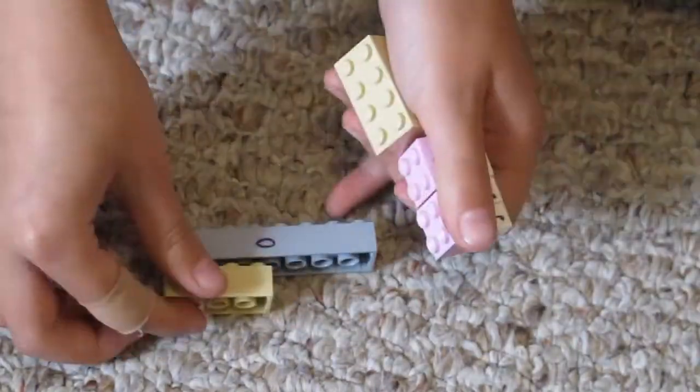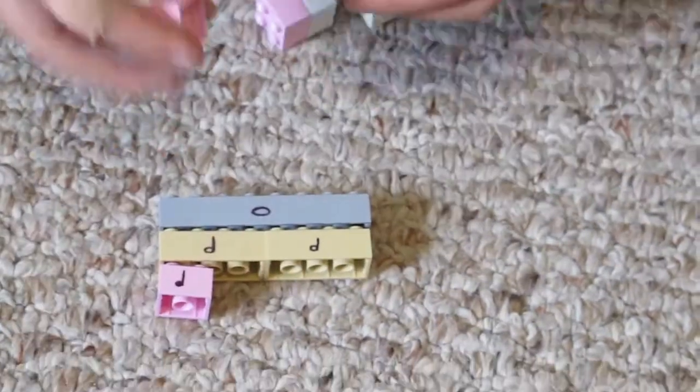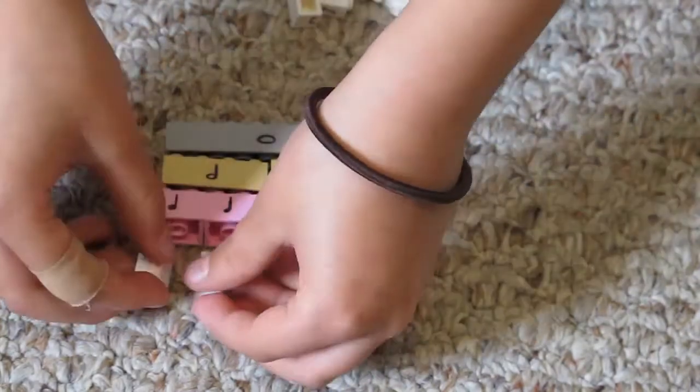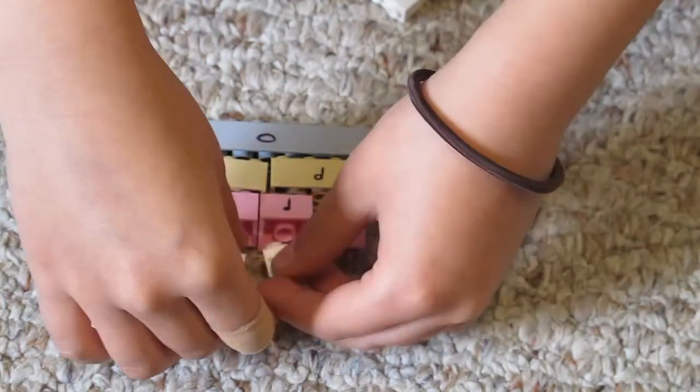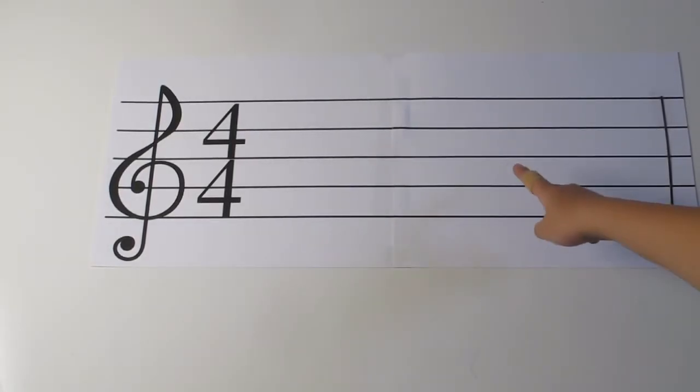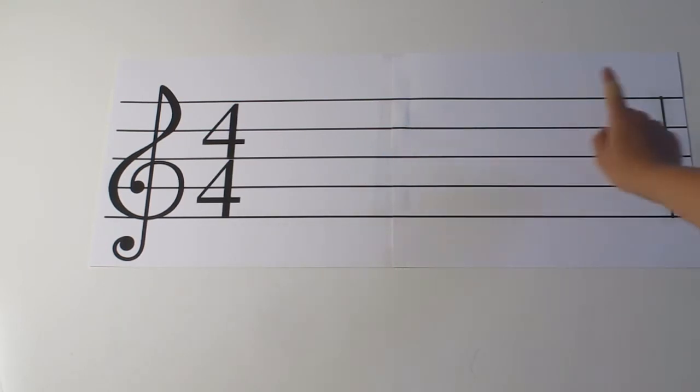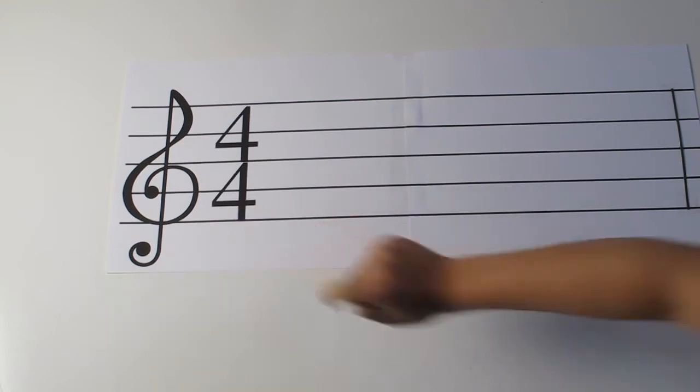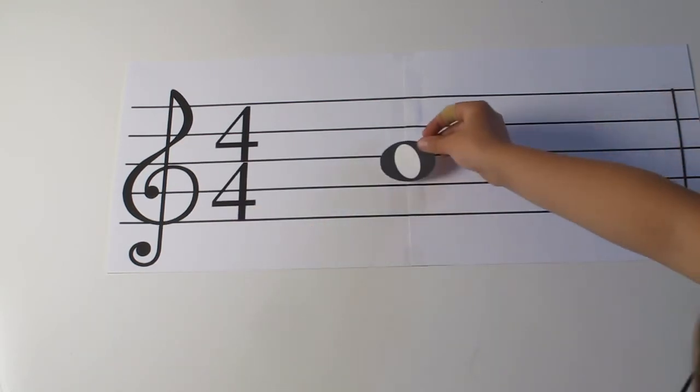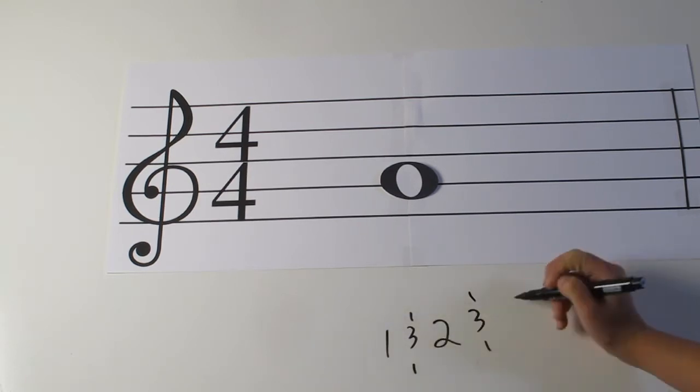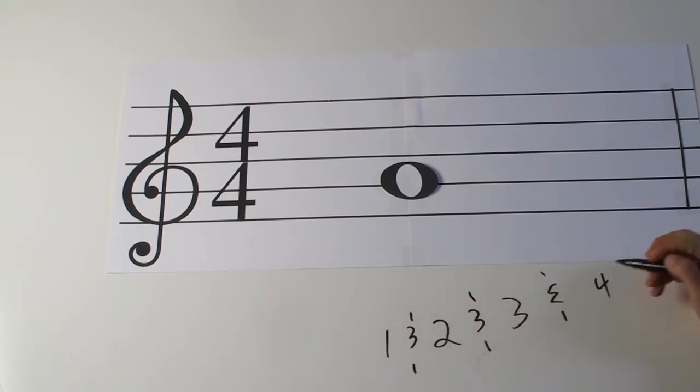Here is another way to look at the Legos. This is a measure. A measure ends where the line is. This is the time signature. And this is a whole note. The whole note gets counted one and two and three and four in. The time signature told us that there are four beats in a measure.